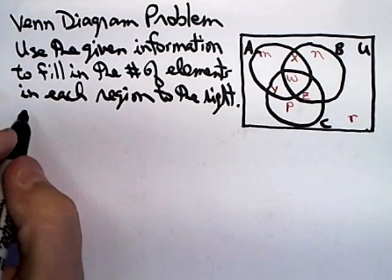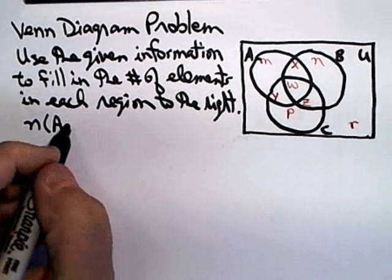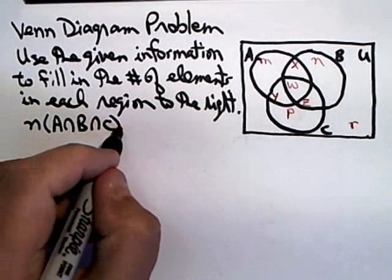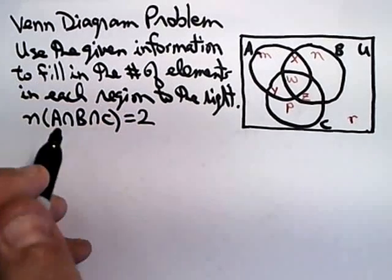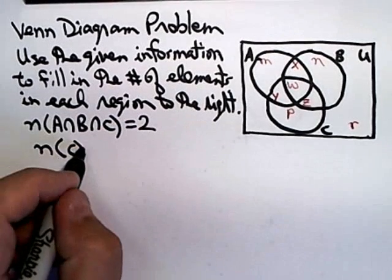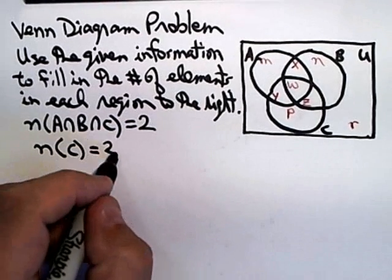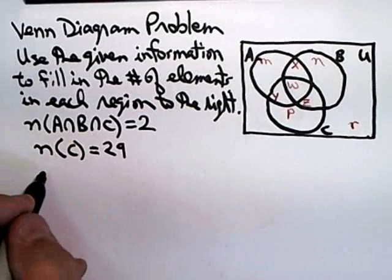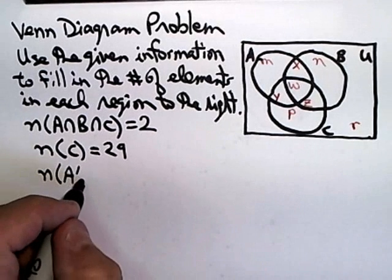What we know is that the number of elements in A intersect B intersect C is 2. We know the number of elements inside of set C is 29. We know that the number of elements in A complement intersect B complement intersect C complement is 8.